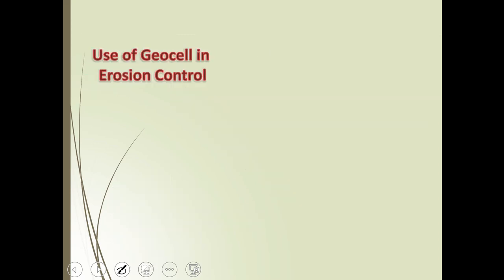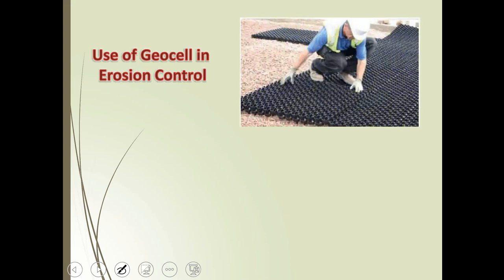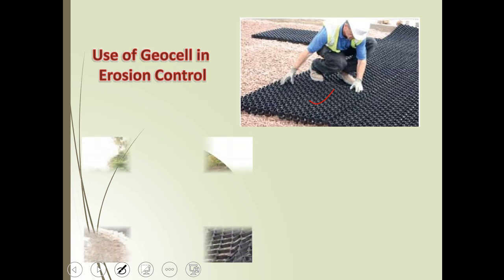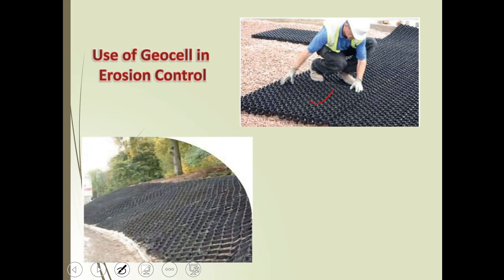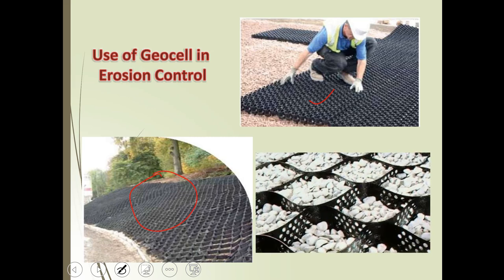Geoshells are a three-dimensional geosynthetic material made of strips of polymer sheets. They are used in erosion control — you can see the geoshell provided over the soil mass, covering it. After placing the geoshell, different types of fill material can be placed within it.